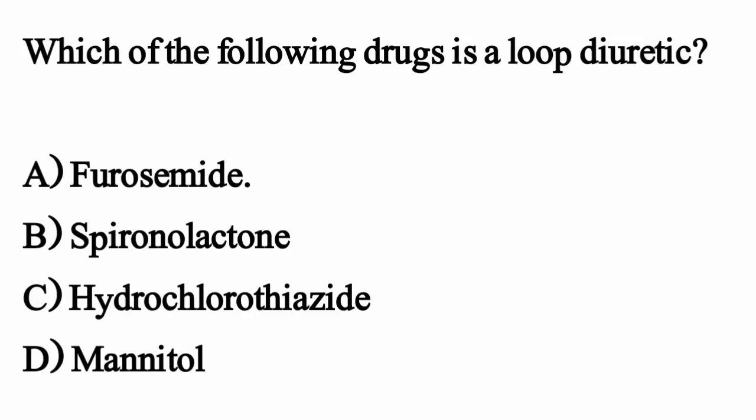Which of the following drugs is a loop diuretic? The correct option is Option A, Furosemide.